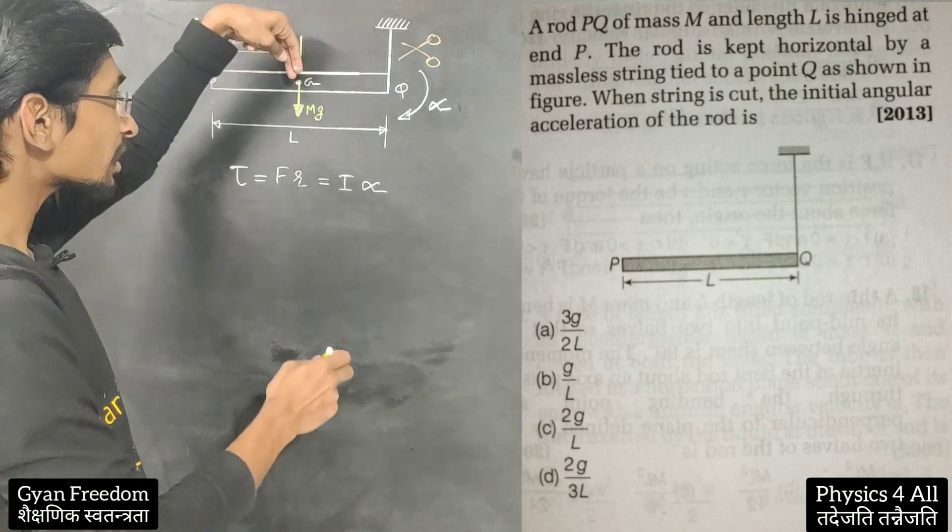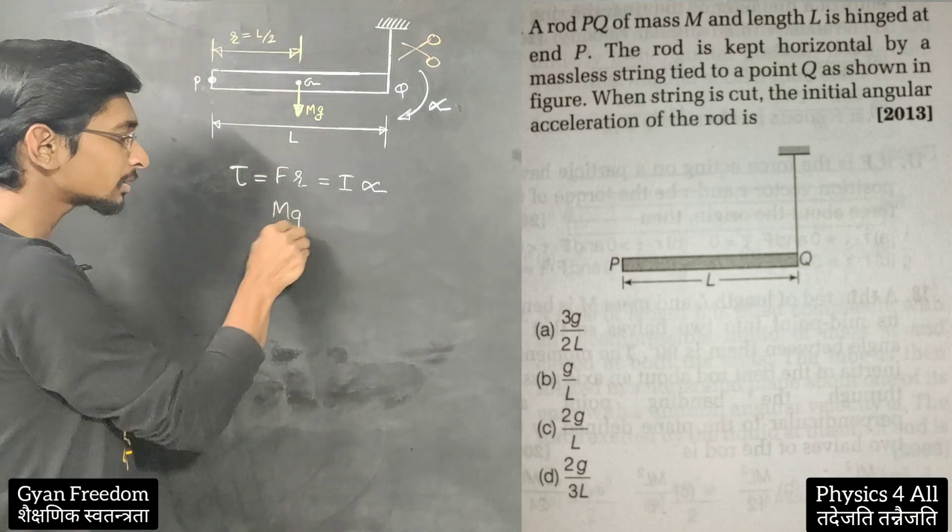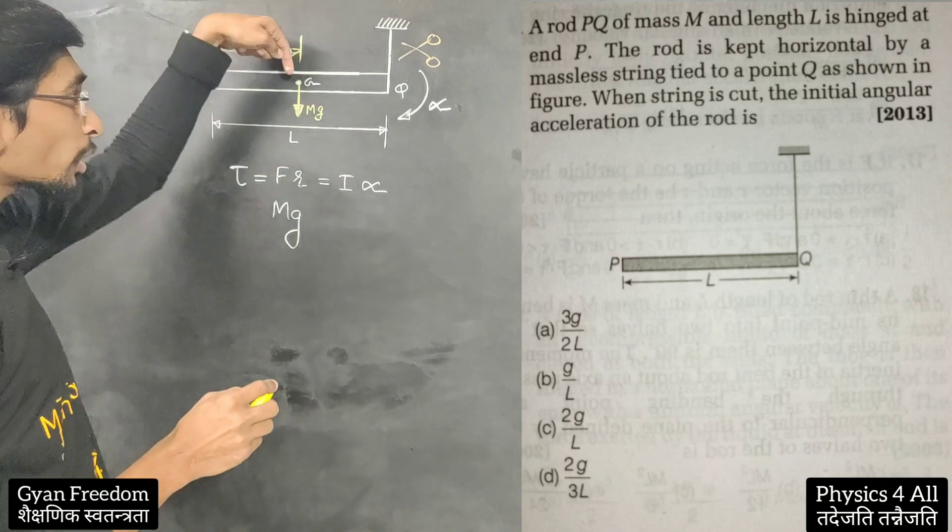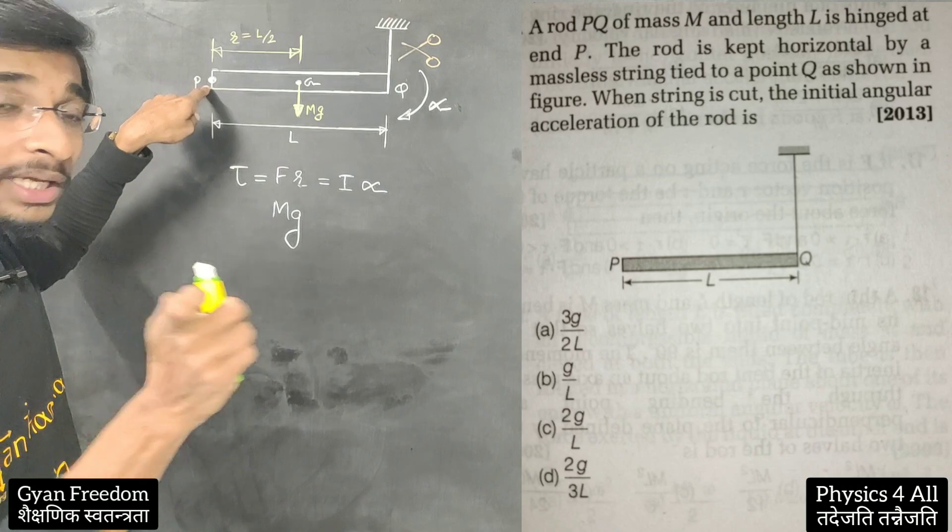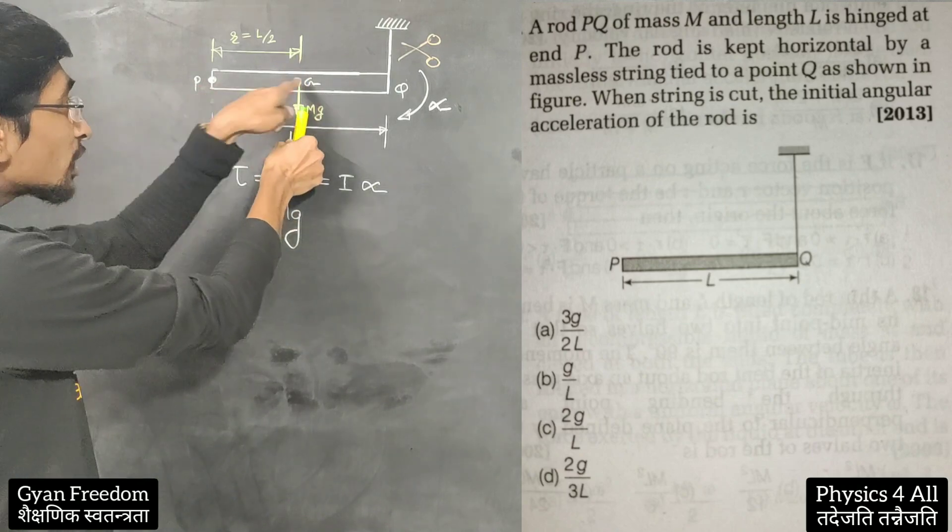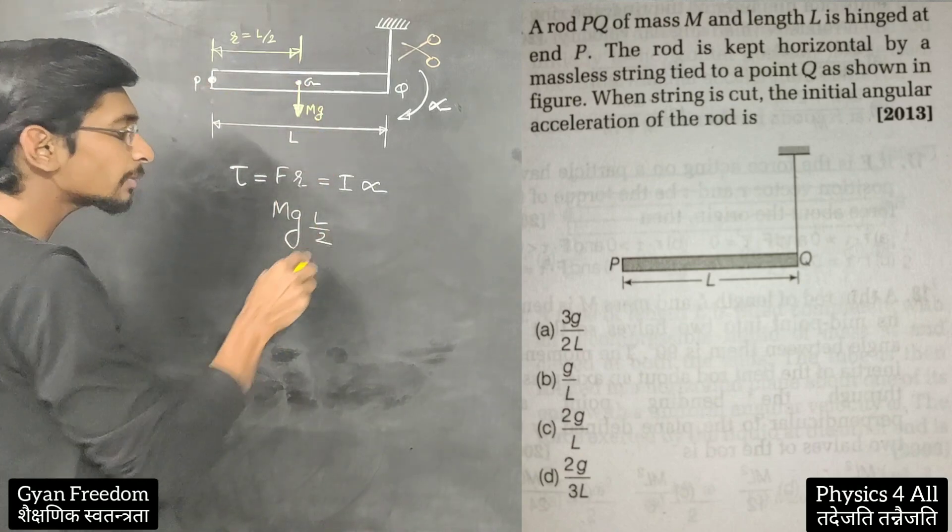So the force, which is self-weight, is mg. Where will it be? At the center of gravity. So this is the point of application. And where will the body rotate? It will be at P. So this is force into perpendicular distance, which is L by 2.